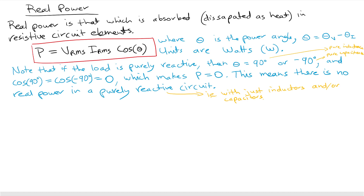If we consider a load that is purely reactive — either a capacitor or an inductor — then the power angle is going to be 90 degrees, meaning the current leads voltage by 90 degrees or the voltage leads current by 90 degrees, depending on whether it's capacitive or inductive. The cosine of ±90 degrees is zero, which makes the real power zero — so there is no real power in a purely reactive circuit.